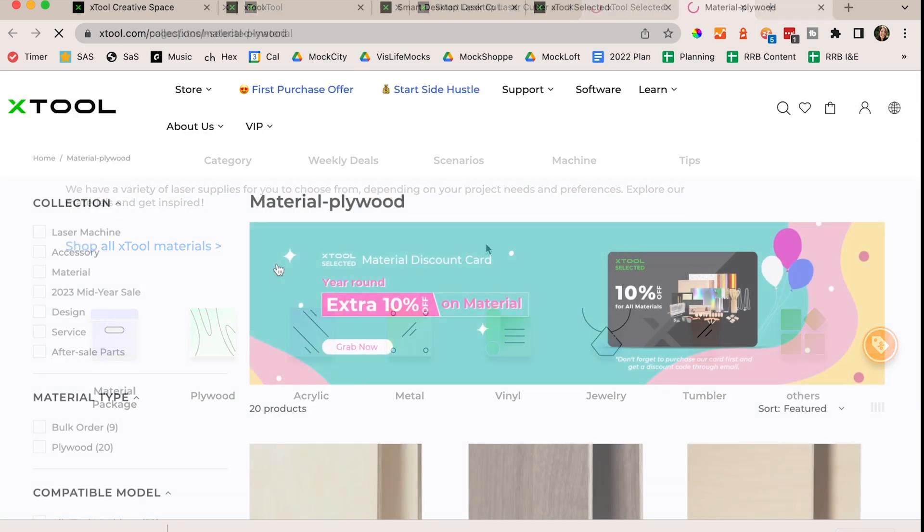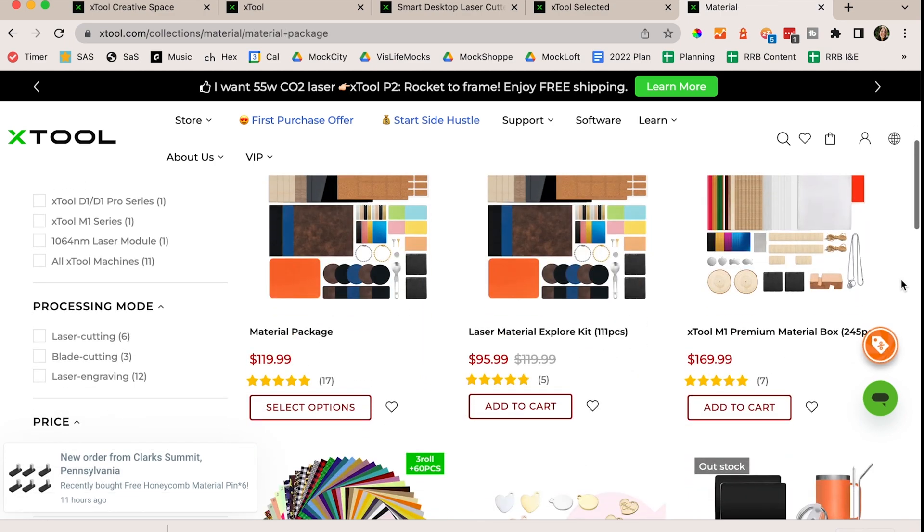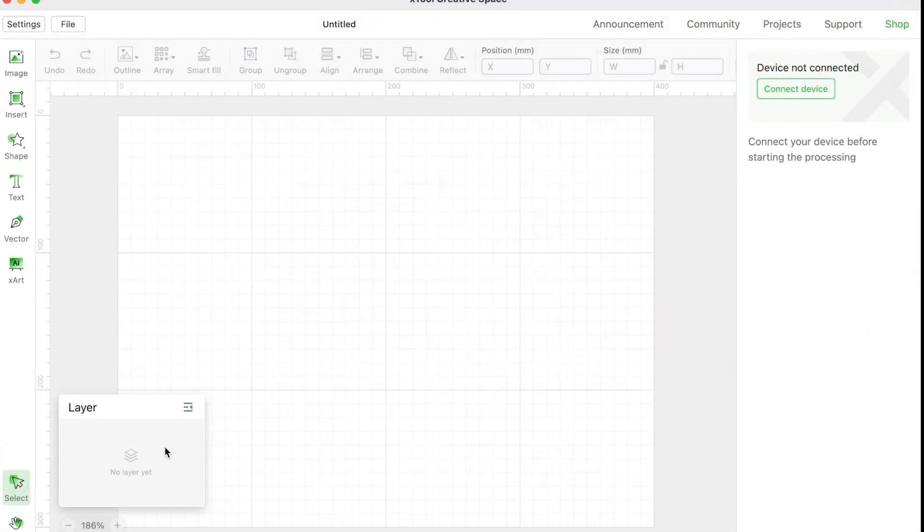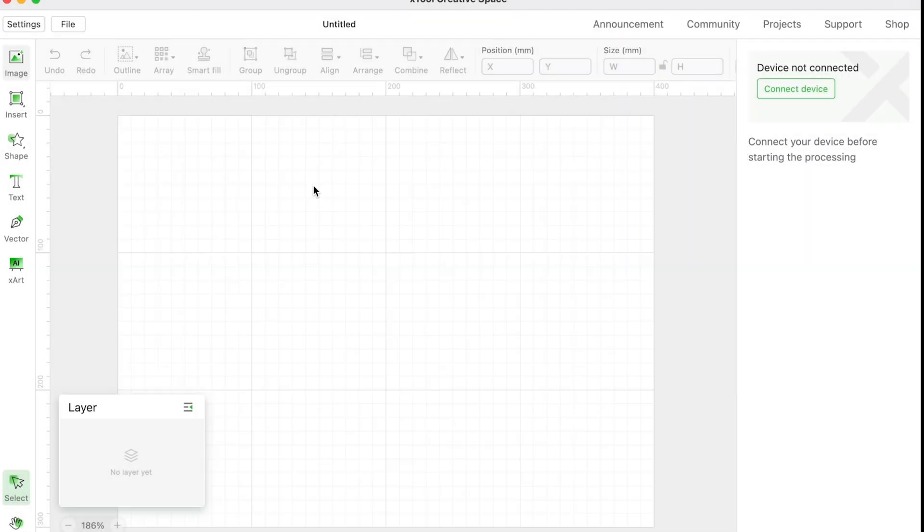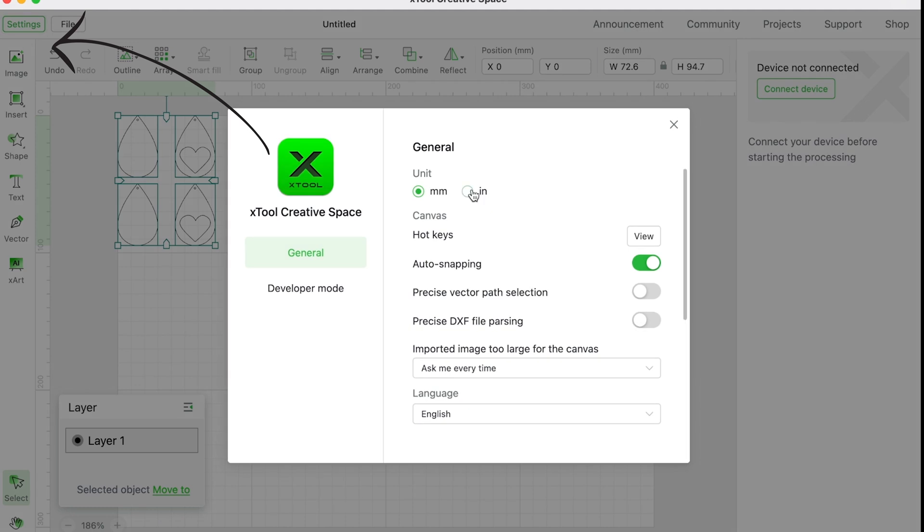I also went to the shop because I like to shop and I picked up some additional plywood and acrylic for future projects. Back into the tool it's ridiculously easy to use. I don't like that this layer thing can ever go away but we'll see what happens in the updates. It's very simple to import SVGs.